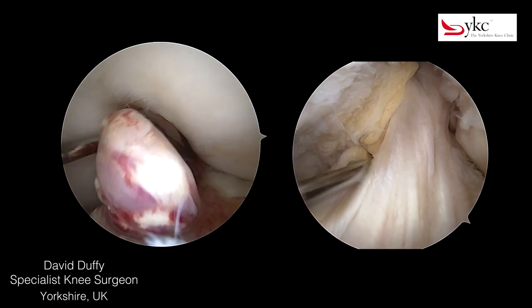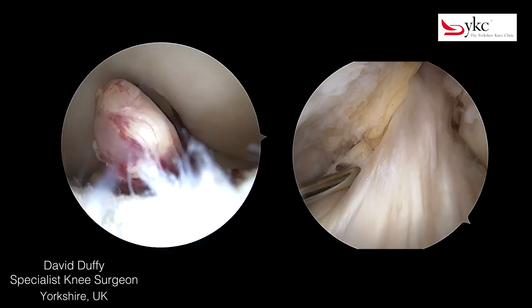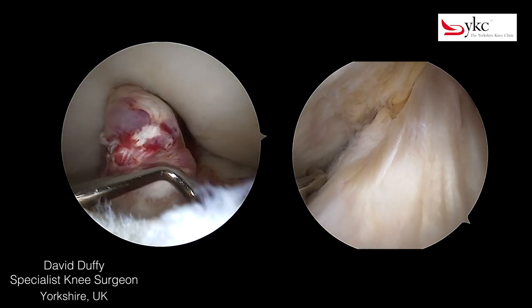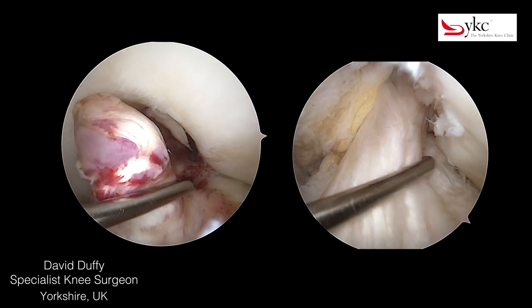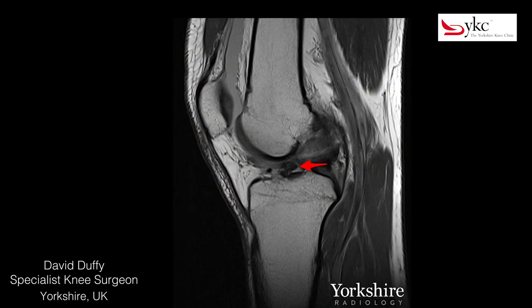Here, a torn and normal ACL are compared. Looking closely at a sagittal MRI, the folded stump of the ACL tissue can be seen, which may be a cause of a block to the patient regaining full extension of the knee.